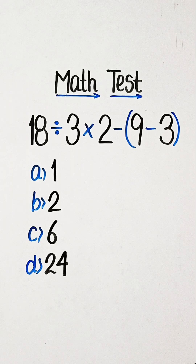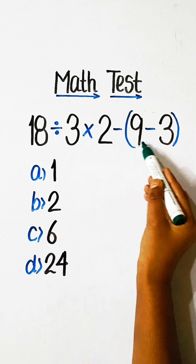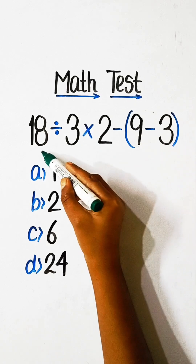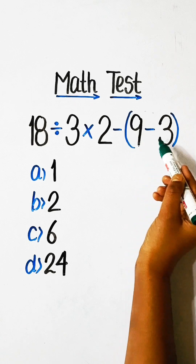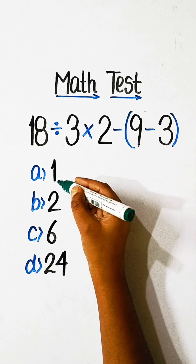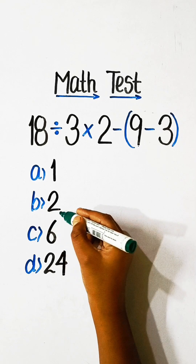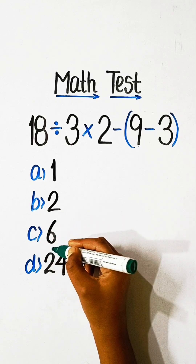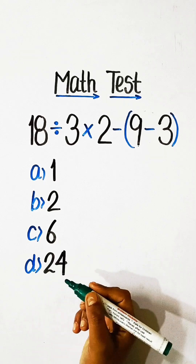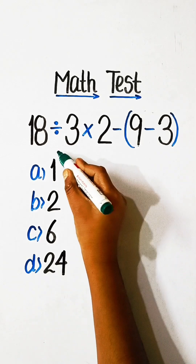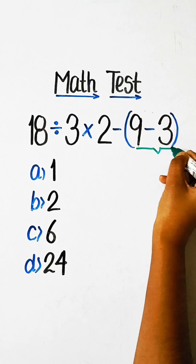Hello friends, welcome back to my channel! In this video we will solve this math problem: 18 divided by 3 multiplied by 2 minus (9 minus 3) equals what? Option A: 1, Option B: 2, Option C: 6, Option D: 24. It's time to solve this — first we solve the bracket part.